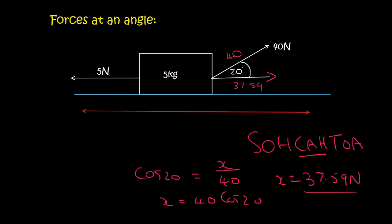And so x is equal to 40 cos 20 which is 37.59 newtons and so now we can comfortably or confidently say that this object is going to go to the right because that 40 newtons when you break it into its horizontal component is 37.59.